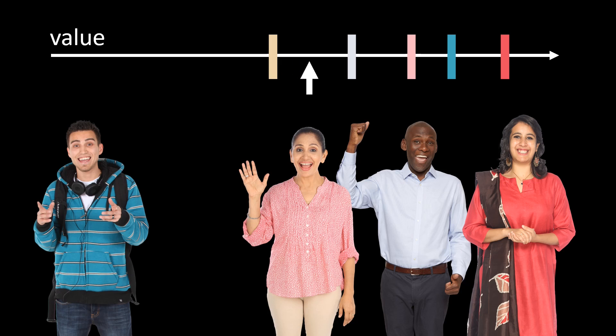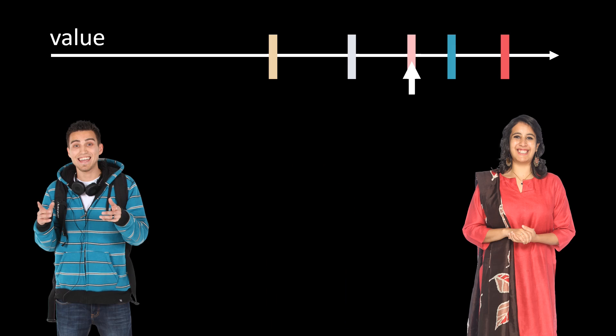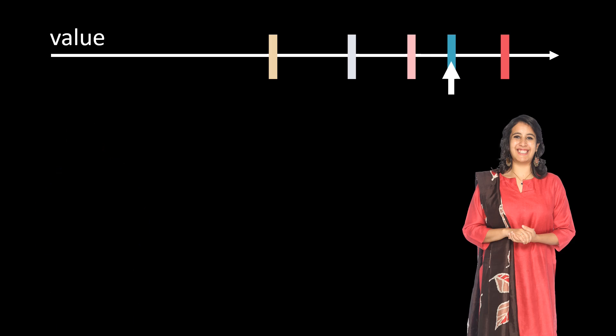As the price rises, more and more players will drop out over time, because the current price is above their valuation of the house. The auction stops as soon as the player with the second highest valuation drops out. Only one single player remains in the game, and it's again Miss Red. However, in the English auction, Miss Red never revealed her secret valuation, and Miss Red only pays the current price, which is the valuation of Mr. Blue. In this case, Miss Red does not have any buyer's remorse at all, because she knows that she paid the absolute minimum price to get the house.